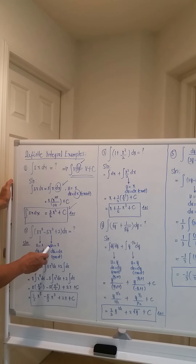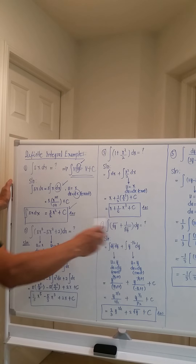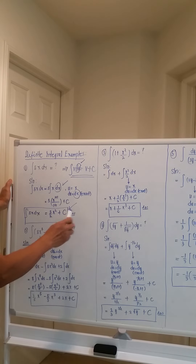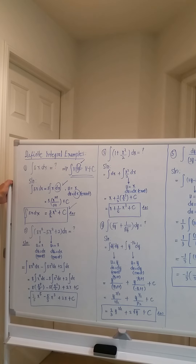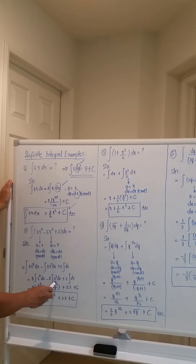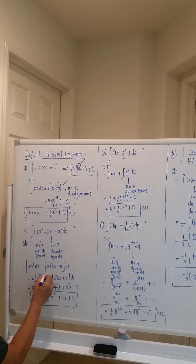For the first term, u₁ equals x, so du₁ equals dx — exact. For the second term, u₂ also equals x, so du₂ equals dx — still the same. This dx here matches, so after verification the differential for the first two terms is exactly the same as dx. We can now apply the power formula. Bringing out the constants: 8 times the integral of x⁴ dx, minus 5 times the integral of x² dx, plus 2 times the integral of dx.